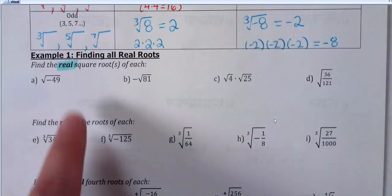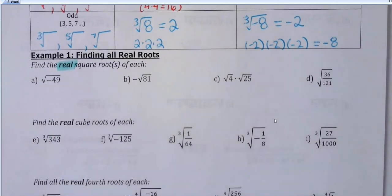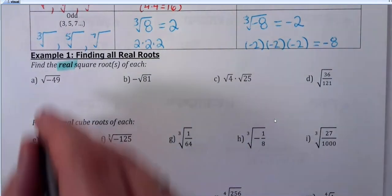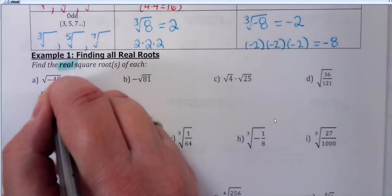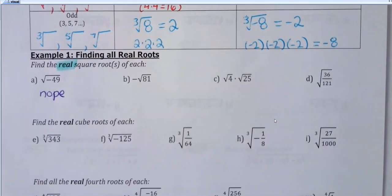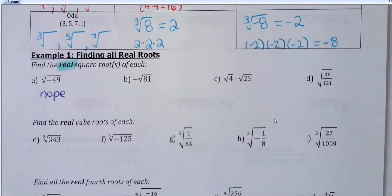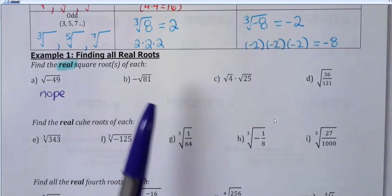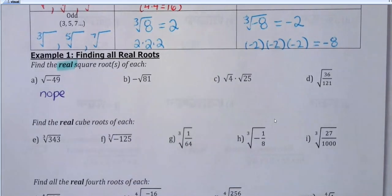What would you write down for the square root of negative 49? No real root there. Can I do the problem next to it — the negative is outside. What would you write down for this one? Negative 9. Done. As long as the negative is on the outside, that's fine.